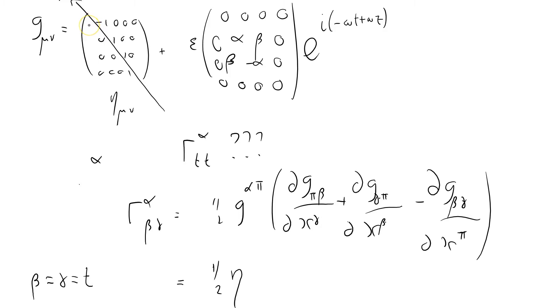So that tells me we've got alpha alpha, because this is diagonal. We know that π also equals α. So times ∂g (I'm doing quite a lot of work here, π equals α, beta and gamma were both t) ∂g_{αt}/∂t + ∂g_{γα} (that was t as well) ∂g_{tα}/∂t - ∂g_{tt}/∂x^α.